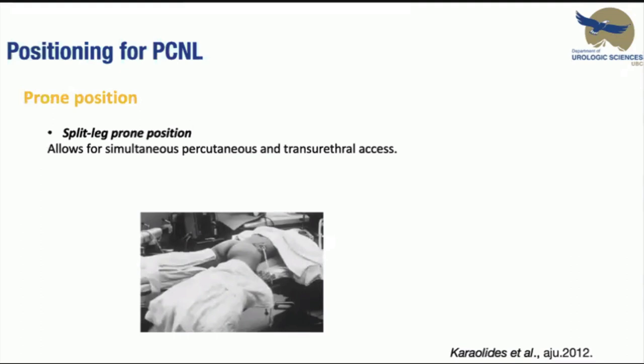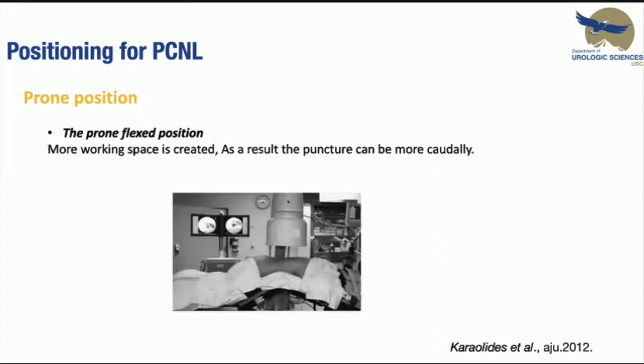To overcome some of the limitations, several positioning modifications have been proposed. The split-leg prone position allows easier simultaneous percutaneous and transurethral access. The prone-flex position involves flexing the table 30 to 40 degrees after turning the patient prone, to open the space between the 12th rib and posterior iliac crest, creating more working space and allowing a more caudal puncture. However, this position impairs respiration and circulation even further.